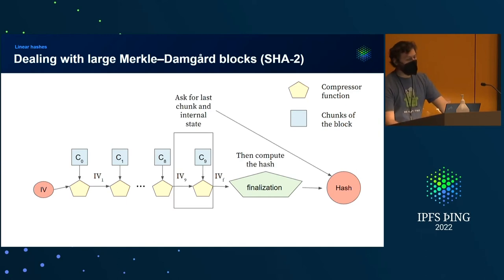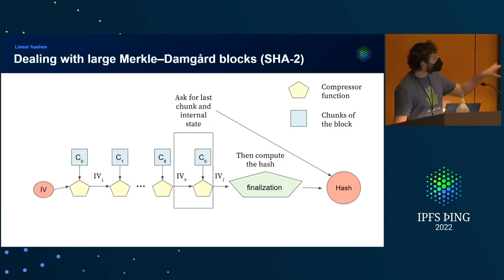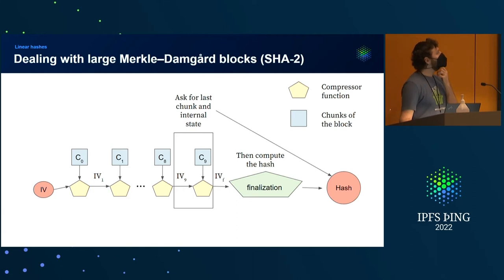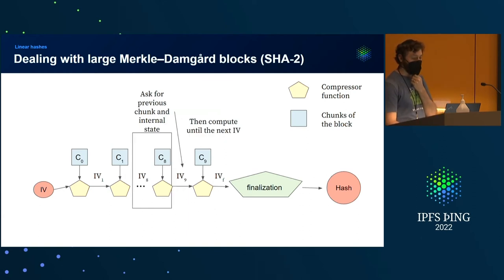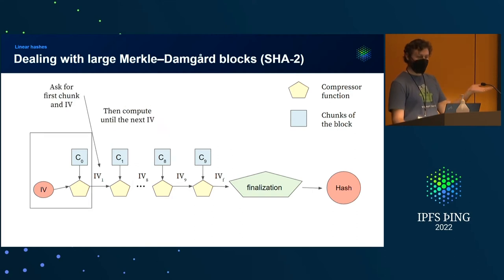Here's a proposal. What if we try to break this up? We say: I'm going to ask for the last chunk of data, C9, and the internal state at that point, IV9. Then I compute and see if it meets the final hash. If it does, I have verifiably downloaded that one chunk of data. Then I ask for the previous one, number eight, and the internal state IV8, compute and see if it matches IV9. And keep going all the way back to the first one, checking it matches the initial IV given by the algorithm.